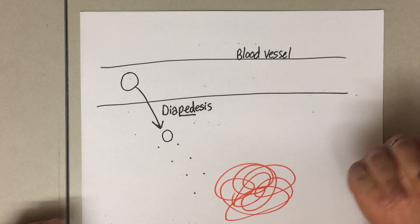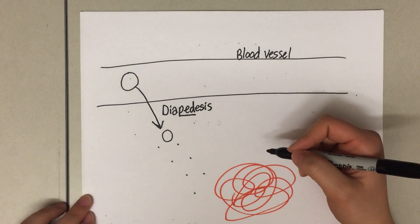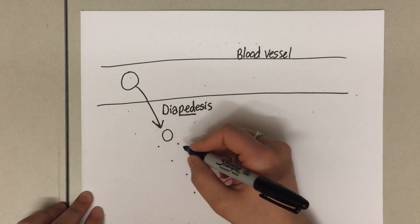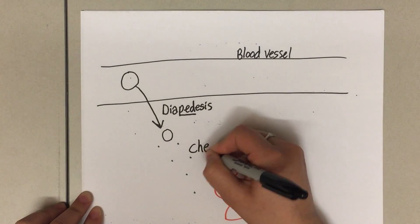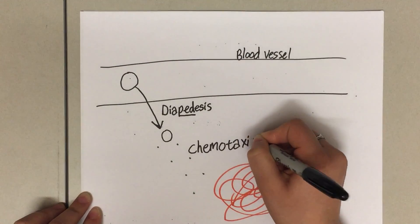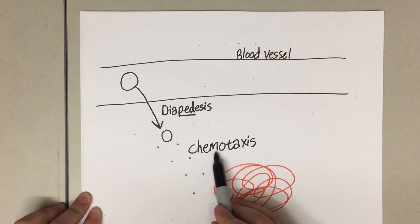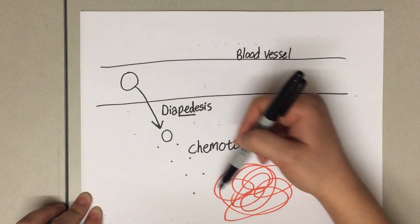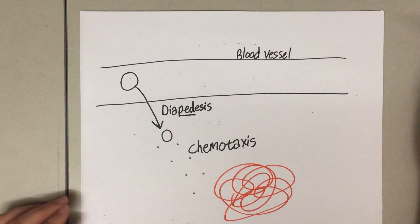So it can find the area where it needs to help clean up any pathogens or debris that entered into the body. This is called chemotaxis. I remember chemotaxis is following the chemical pathway - it's like taking a chemical taxi to the area of inflammation where it's needed.